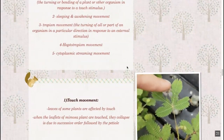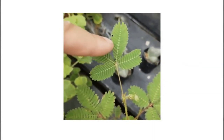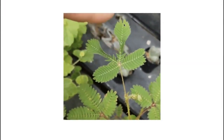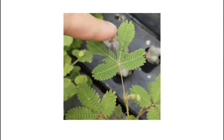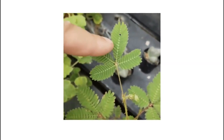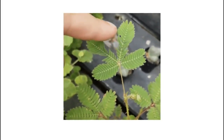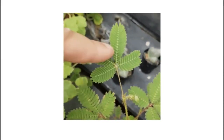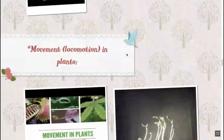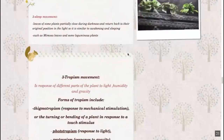We start with touch movement. As we can see, once a touch occurred on the very small leaves of the mimosa plant, it experienced turning or bending or closing or wilting. It started to move or close on itself. This is called touch movement, or as we agreed, thigmotropism.